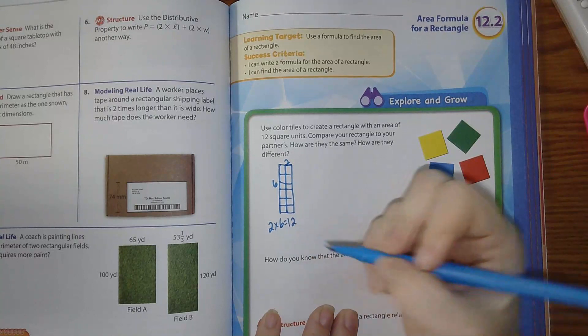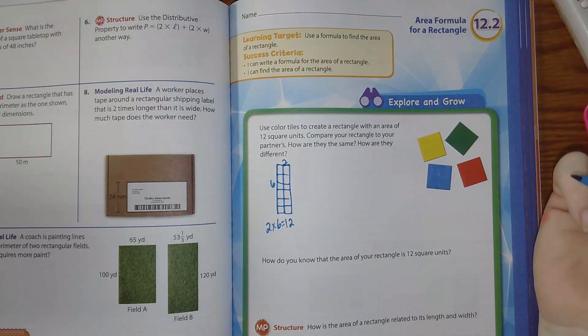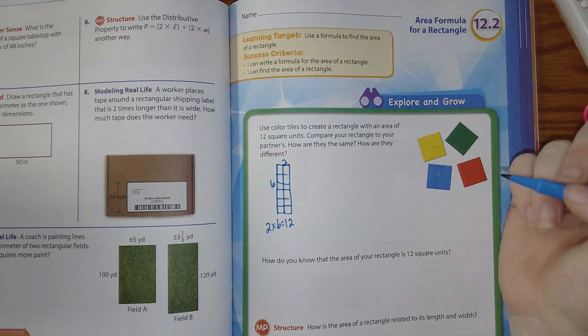So two times six is what? Twelve. Is that correct? Yes. Yes. What's another way that we could do it? Six times two. Yes.